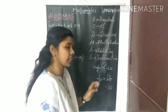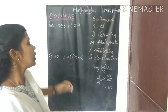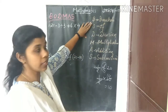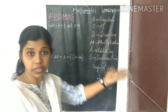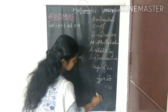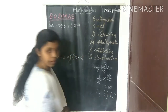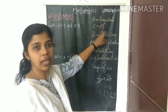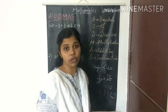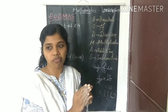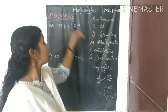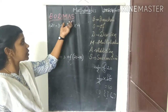The BODMAS rule tells us the order of operations when all these operations come together in a mathematical expression. First do brackets — simple bracket first, then curly bracket, then square bracket. Then 'of' function, then division, then multiplication, then addition, and last subtraction.